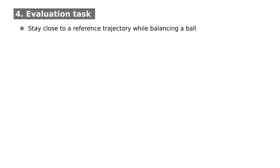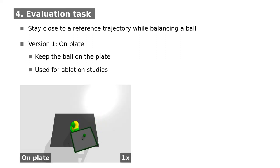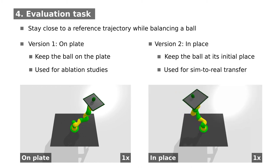We evaluate our approach with two versions of a ball-on-plate task, where the goal is to stay close to a reference trajectory while balancing a ball on a plate. The first version allows the ball to move on the whole plate. We use this task for ablation studies, as the required amount of training data is moderate. Version 2 is a little bit harder, since the ball is expected to stay at its initial position on the plate. This version is used for sim-to-real experiments, which are shown later.